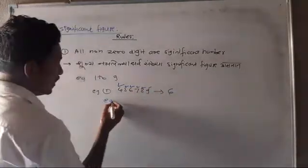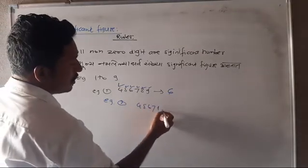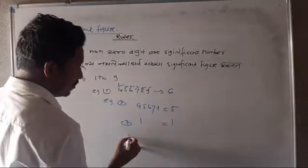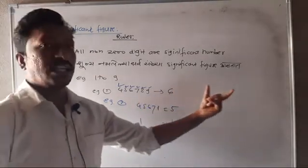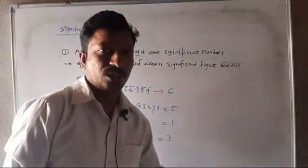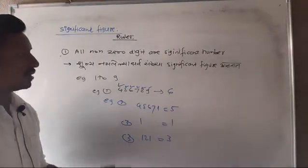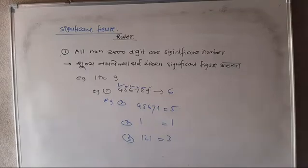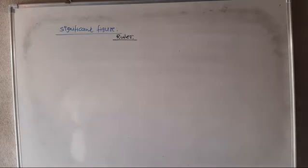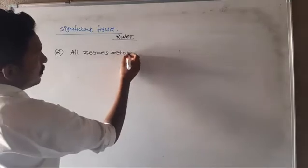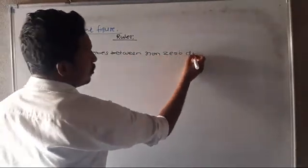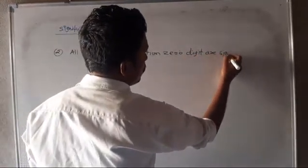Example number two: if you think about the total significant figures, remember the first rule — all non-zero digits are significant figures. Rule 2: all zeros between non-zero digits are also significant figures.